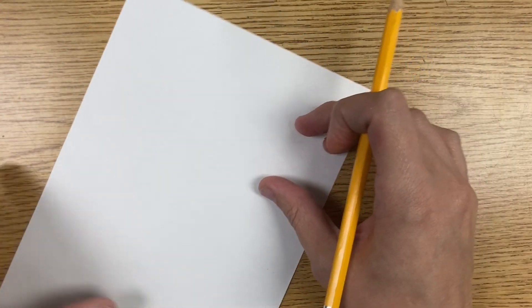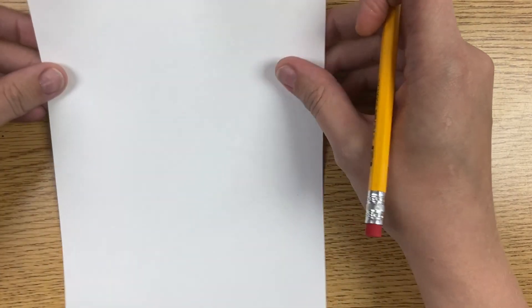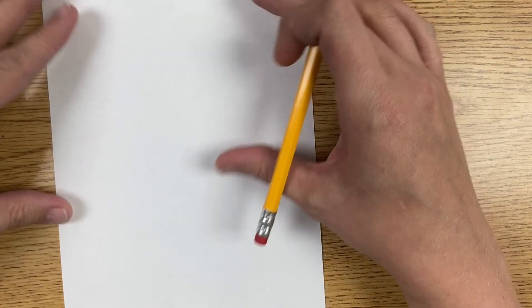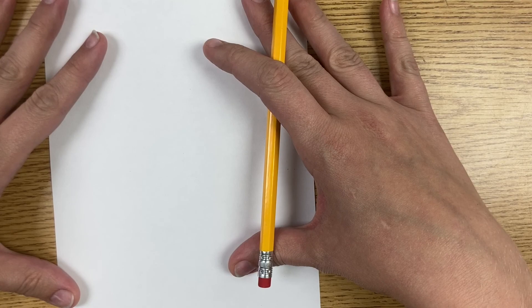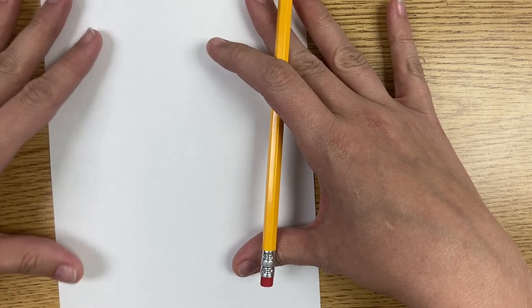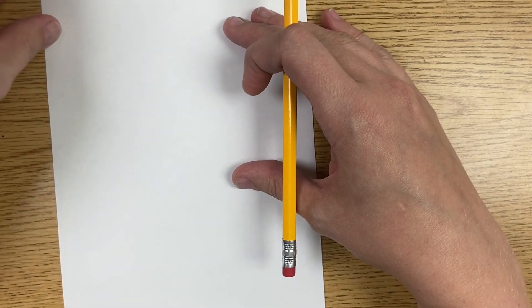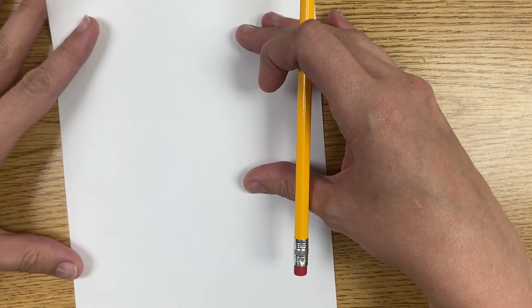Then what you're going to do is you're going to flip your paper over, and we need to turn our paper up and down like this. And even if your shape that you come up with today or your subject that you're going to do is not long like this, we need to make our paper like this because the way that we're going to set up our positive and negative space later.